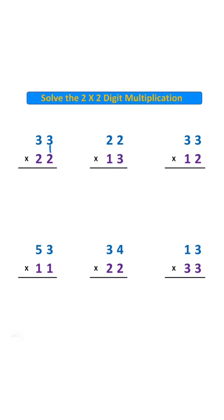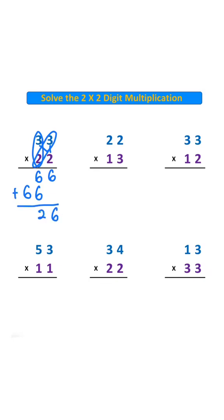3 times 2 is 6. 6 plus 0 is 6. 6 plus 6 is 12. 1 plus 6 is 7. Answer is 726.